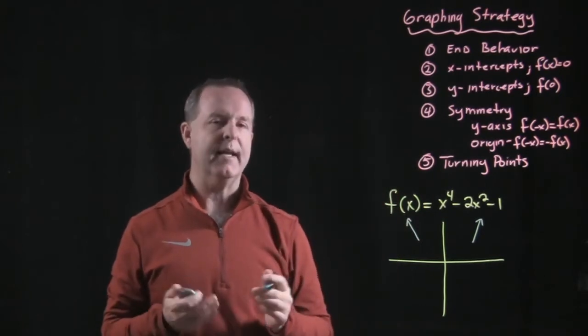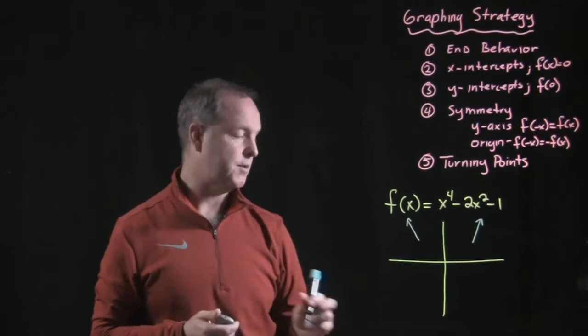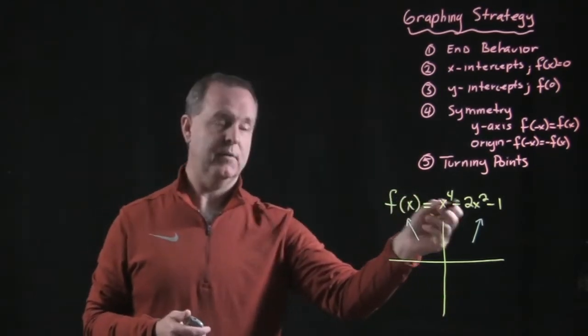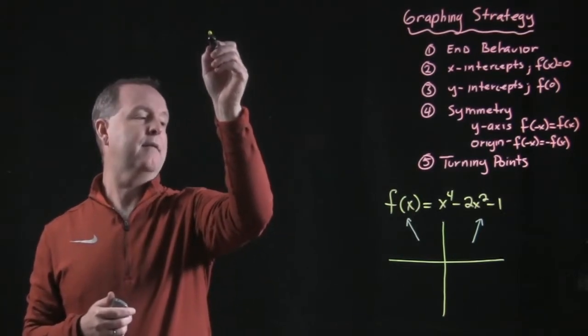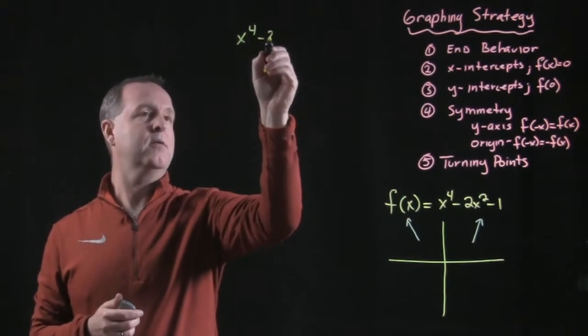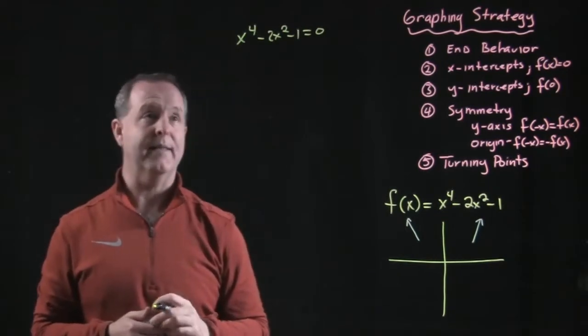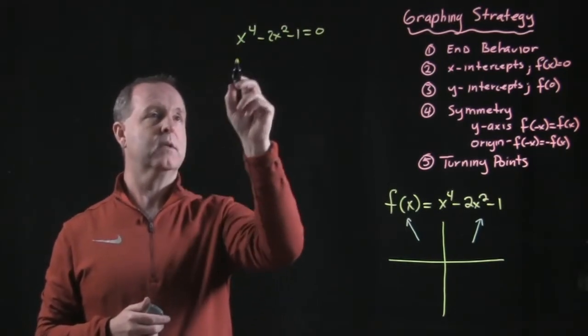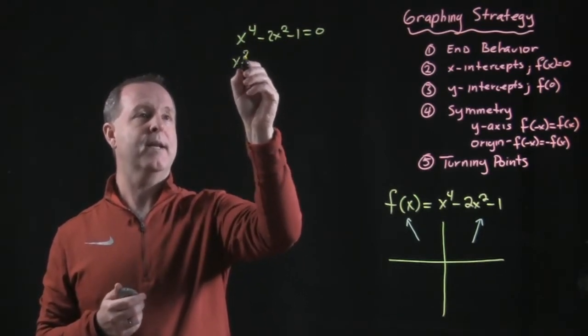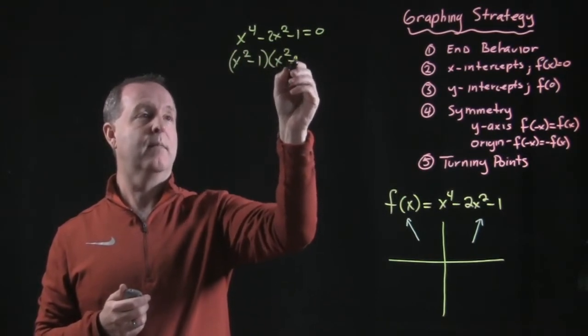Second thing we want to look at is the x-intercepts. Try to get an idea where f of x equals zero. So in order to do that, we need to solve that for zero. So we have x to the fourth minus 2x squared minus 1 set equal to zero. Where are the x's that make that true? This factors into, it's a perfect square, so x squared minus 1 times x squared minus 1.